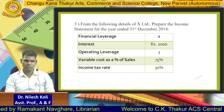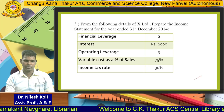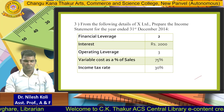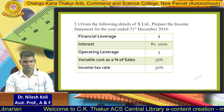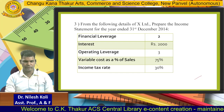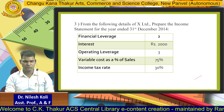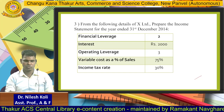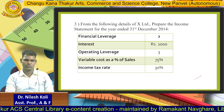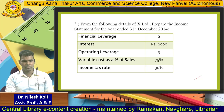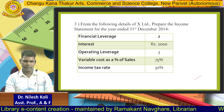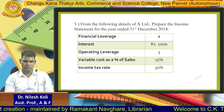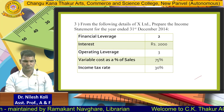From the following details of X Limited, prepare the income statement for the year ended 31 December 2014. The data given is: financial leverage = 2, interest = 2000, operating leverage = 3, variable cost as a percentage of sales = 75%, and income tax rate = 30%. So information about both financial leverage and operating leverage has been given.